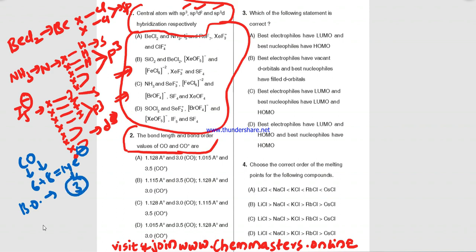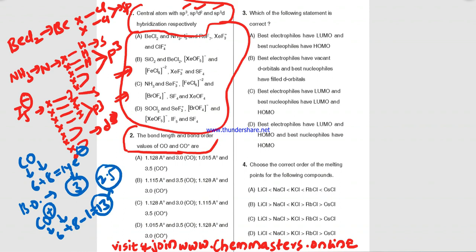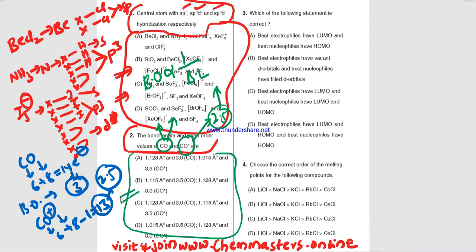According to the bond order scale, a 14-electron species has a bond order of 3. For CO+, carbon contributes 6 and oxygen contributes 8 electrons, but the +1 charge means we subtract 1, giving 13 electrons total — corresponding to a bond order of 2.5. Since bond order is inversely proportional to bond length, CO with bond order 3 has a shorter bond length than CO+ with bond order 2.5. However, no correct combination is available in the given options.